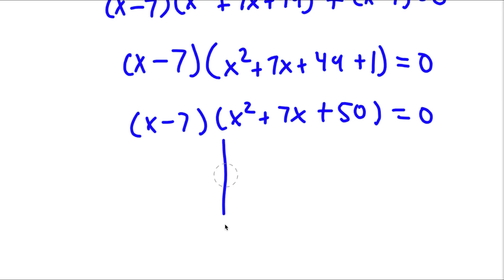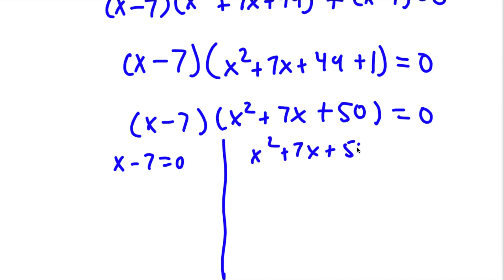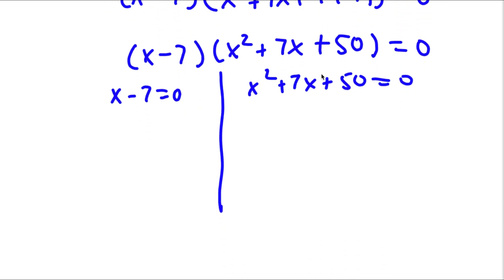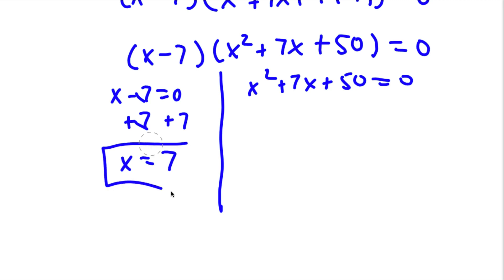So now this gives me two equations. I have x minus 7 is equal to 0, and I also have x squared plus 7x plus 50 is equal to 0. Now for x minus 7 equals 0, I can simply add 7 on both sides, so these two cancel out, and I'll be left with x equals 7.